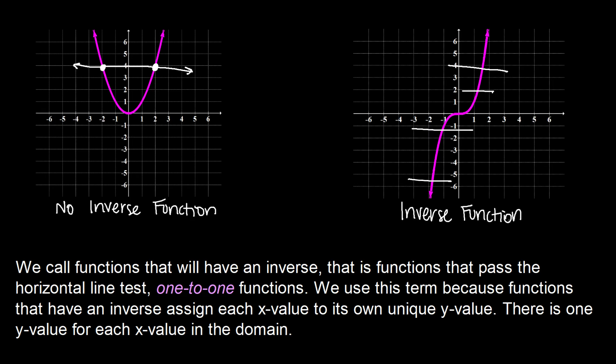So we call functions that will have an inverse, that is functions that pass the horizontal line test, we call them one-to-one. So that term comes from the fact that if a function can pass both the vertical line test, making sure that it is a function, and then also the horizontal line test stating that it does have an inverse.